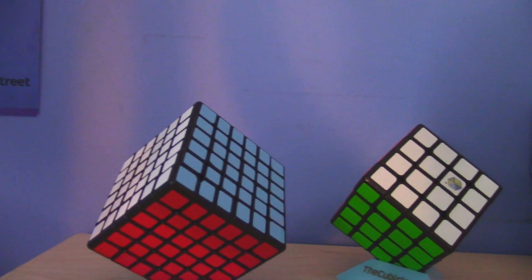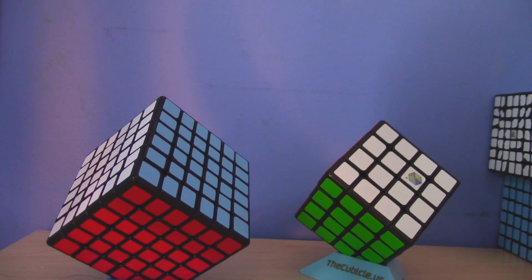When Yushin made odd layered cubes, like their 3x3s and 5x5s, they were great. But when they made an even layered cube for the first time, it sucked. Well, at least I think so. Now, they made a 6x6 and a new 4x4. Have they fixed what they got wrong?